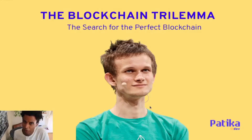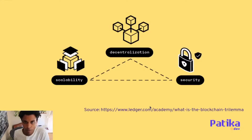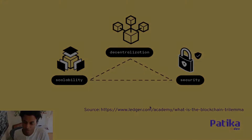There are three concepts naturally in a trilemma: the scalability of the network, the decentralization of the network, and the security of the network. These are all very important when designing a blockchain, and they all have ways you can balance them to make technical decisions on how you want your network to grow and function.